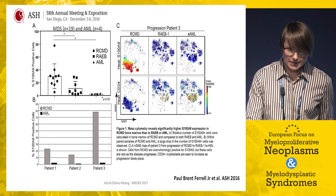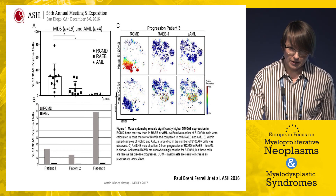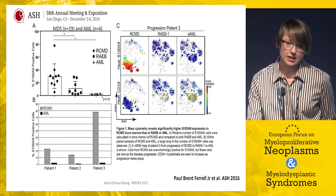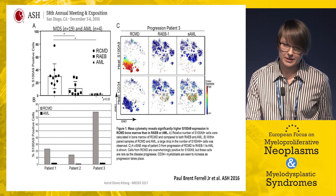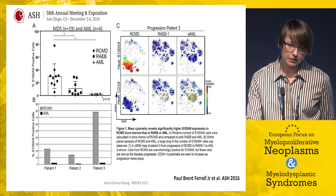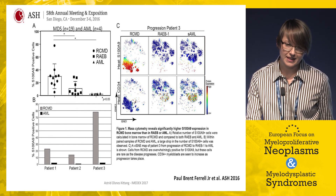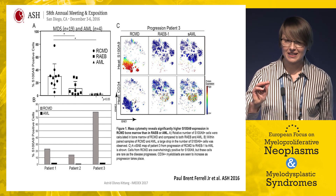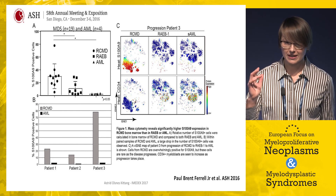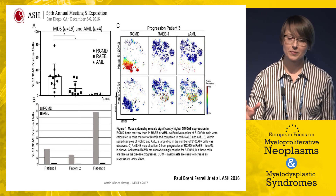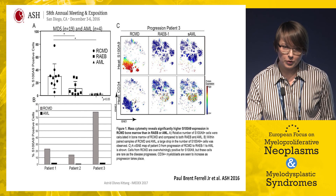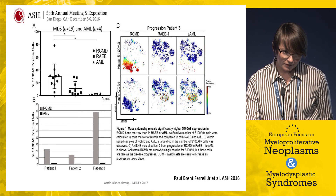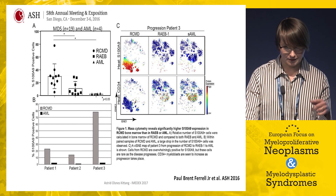This was recently presented at ASH by Ferrell et al., showing that in 19 MDS patients — most with RCMD — there were high levels of S100A9-positive cells. This expression decreased with increasing blast number: expression was lower in RAEB patients and disappeared in AML patients. Three patients who progressed from RCMD to AML were followed, and in patient number three, very high S100A9 expression during RCMD decreased as the disease progressed to AML, while the percentage of CD34-positive cells increased.